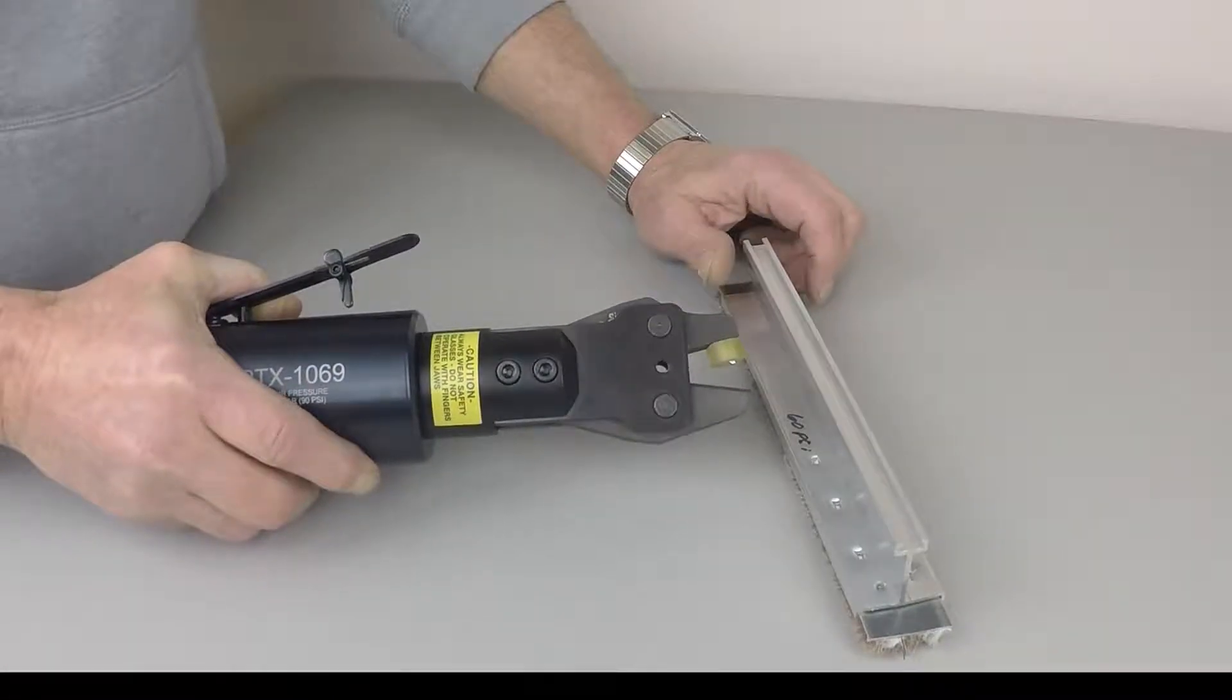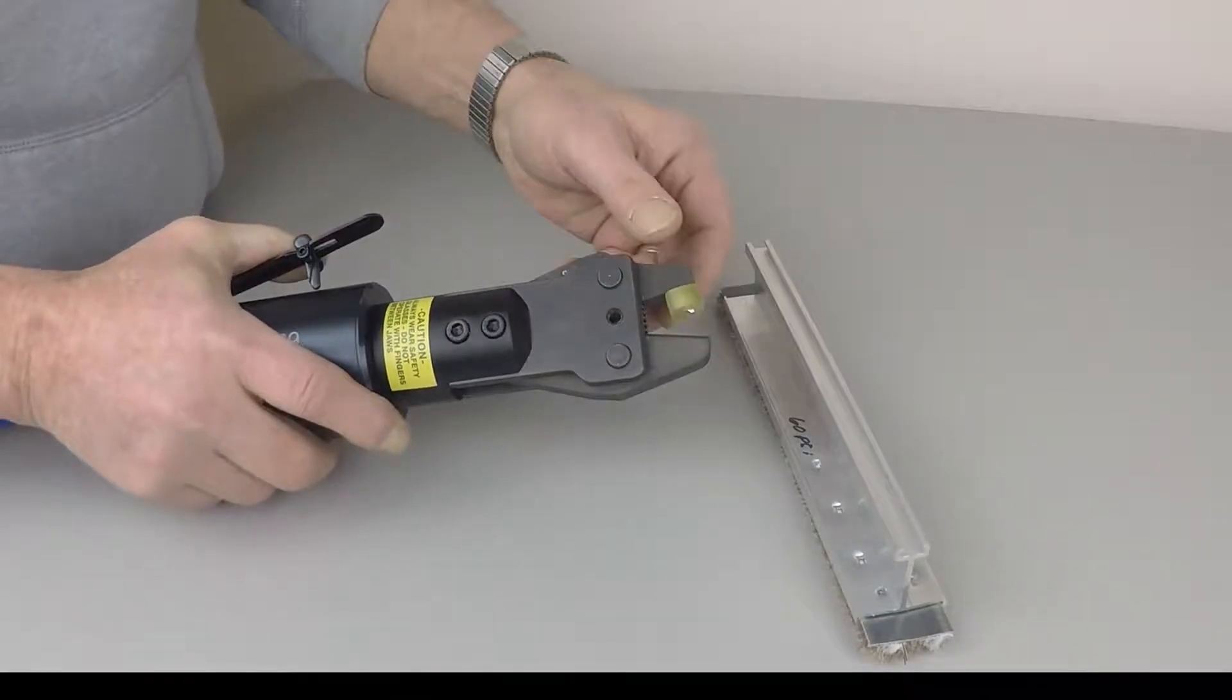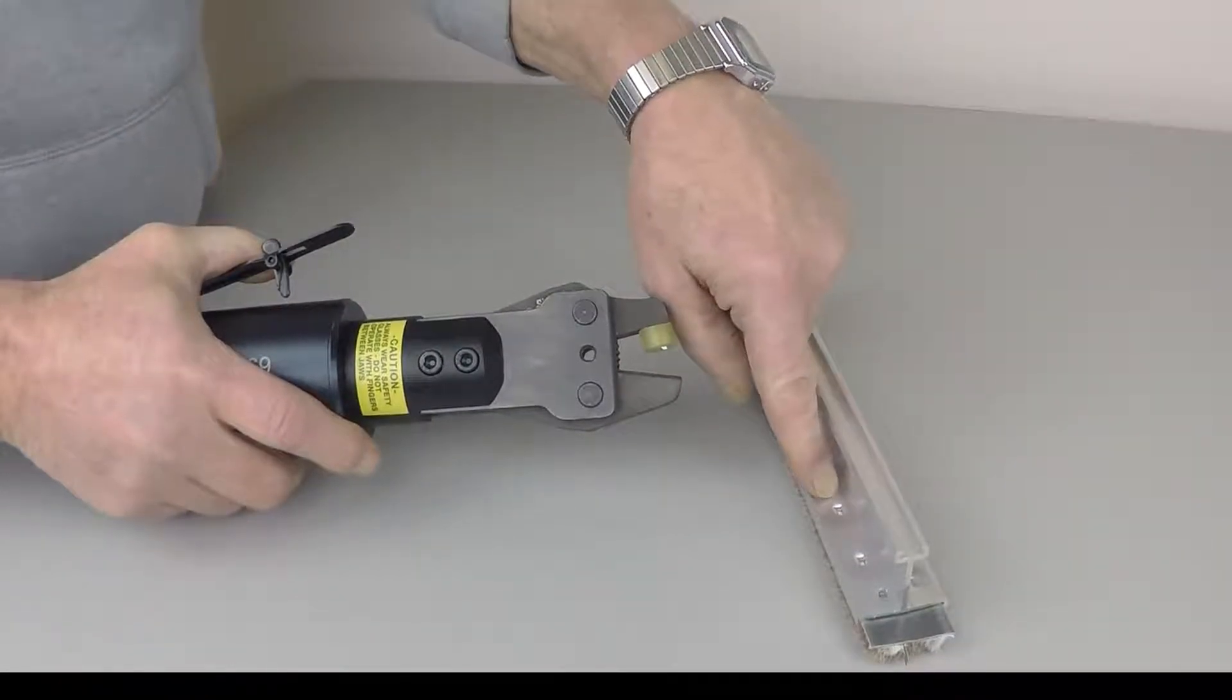This is the PTX 1069. It's a pneumatic crimp tool that was designed to crimp an aluminum channel.